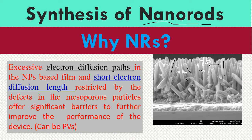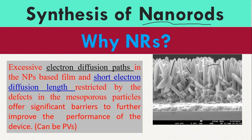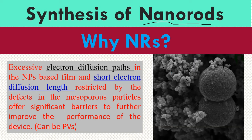If you look into nanomaterials, as I explained in my first video, there are so many problems. For instance, excessive electron diffusion paths — if you look here, there are so many paths. But in a nanorod there is one straight path, like a road. In a nanoparticle it is congested with so many diffusion paths.